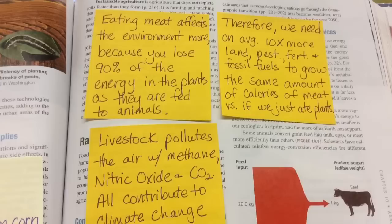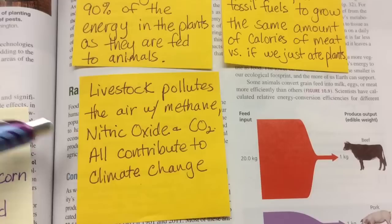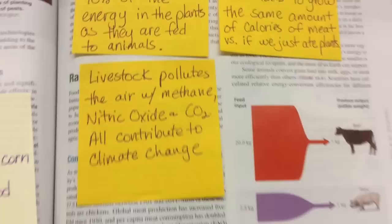Even if you don't like vegetables, this includes grains and bread products too. The other issue with livestock is that it pollutes the air with methane, which is a greenhouse gas; nitric oxide, which is an air pollutant and a greenhouse gas; and carbon dioxide, which is a greenhouse gas — and these all contribute to climate change.